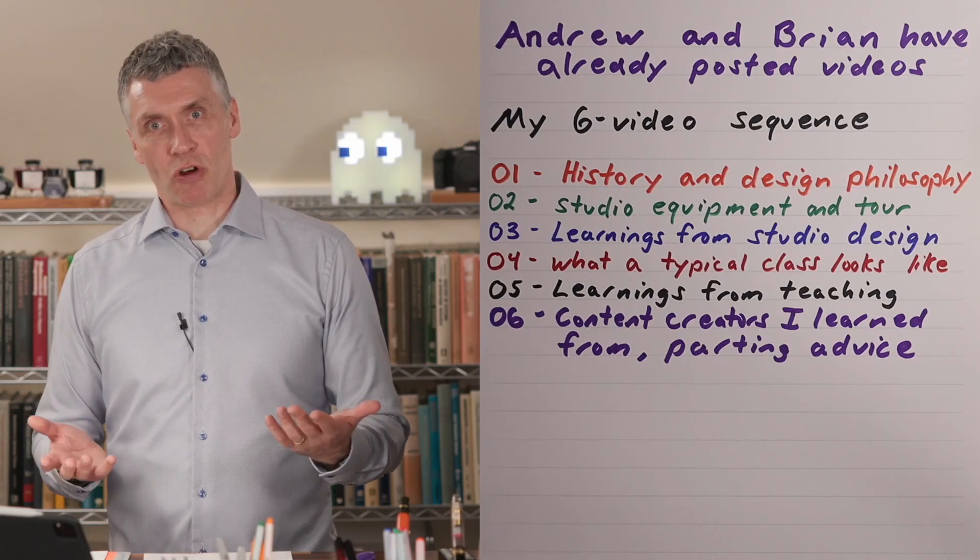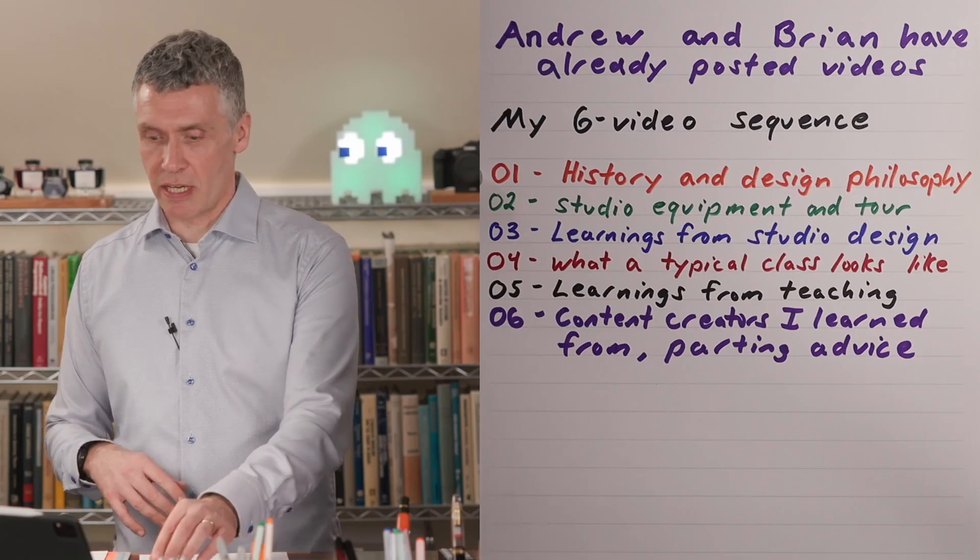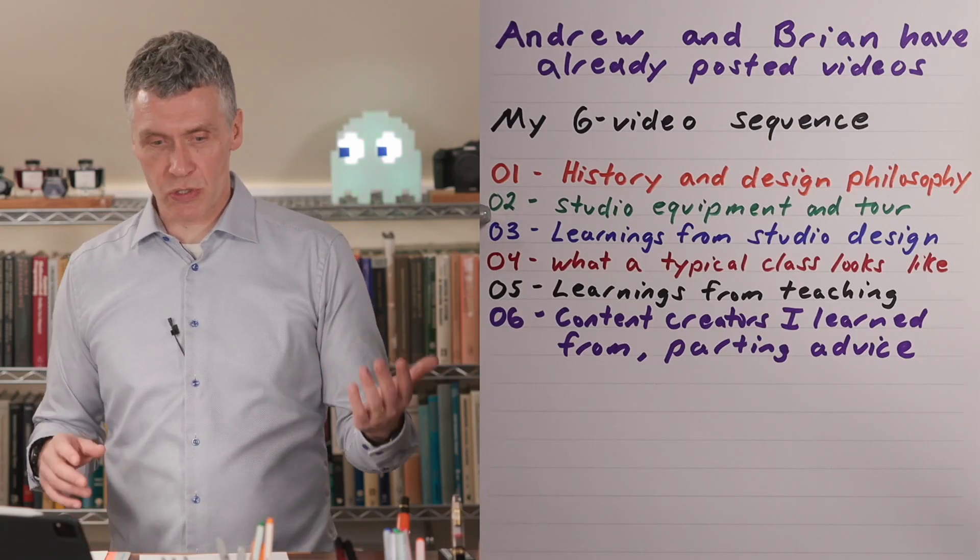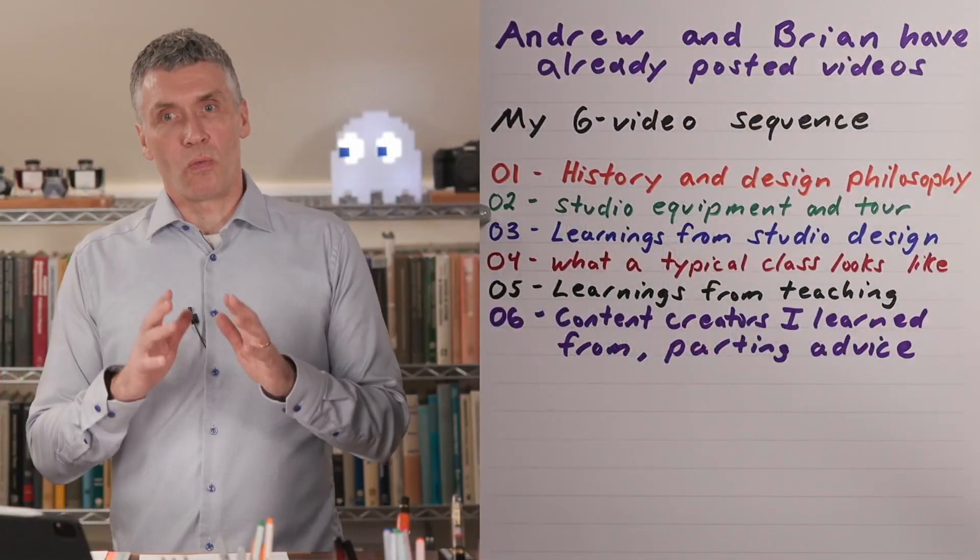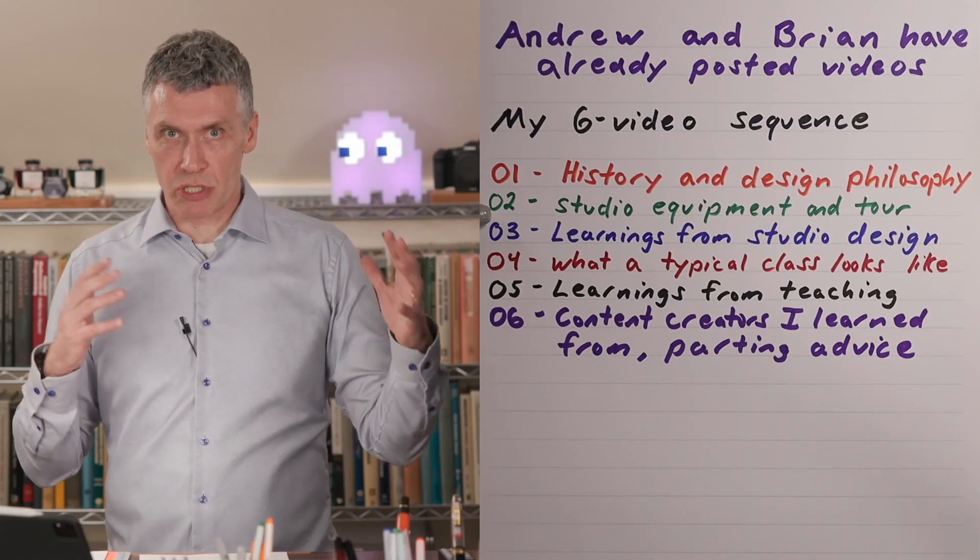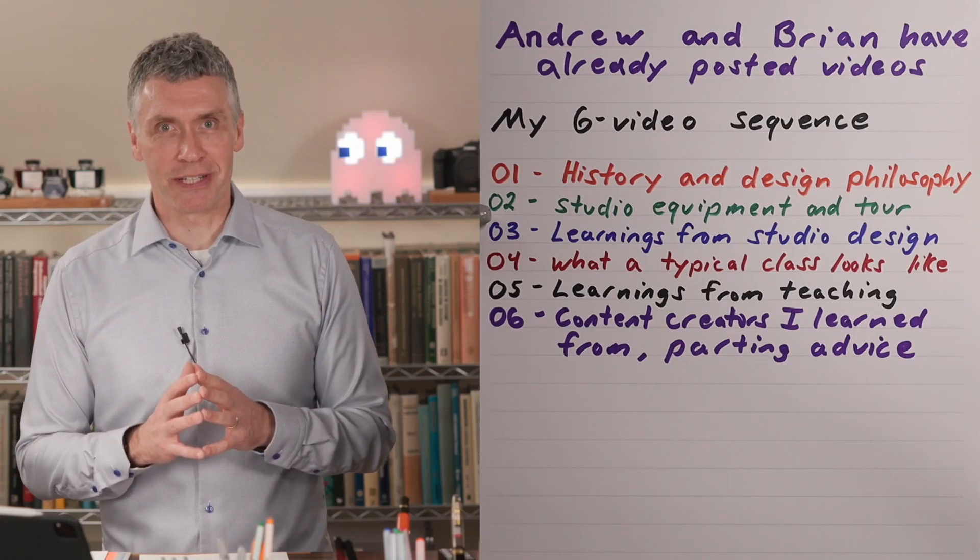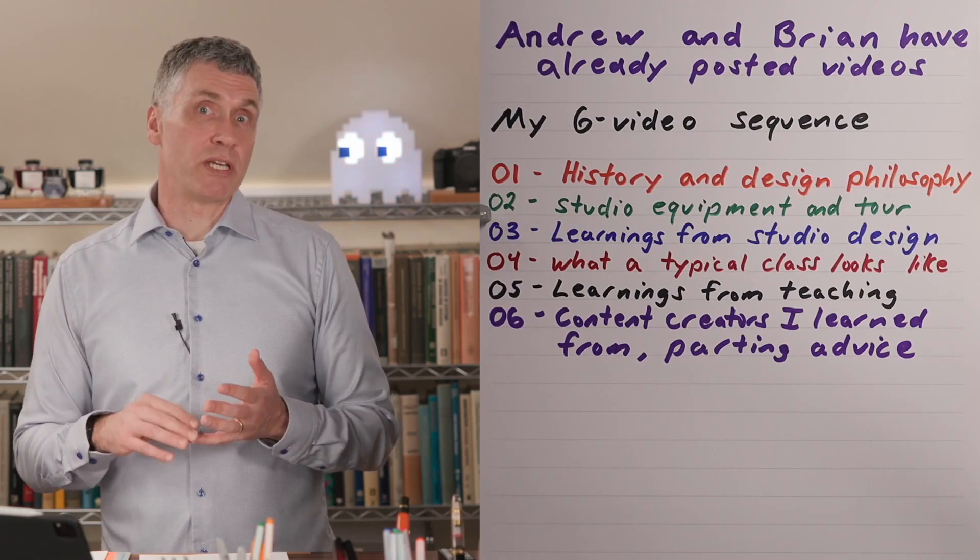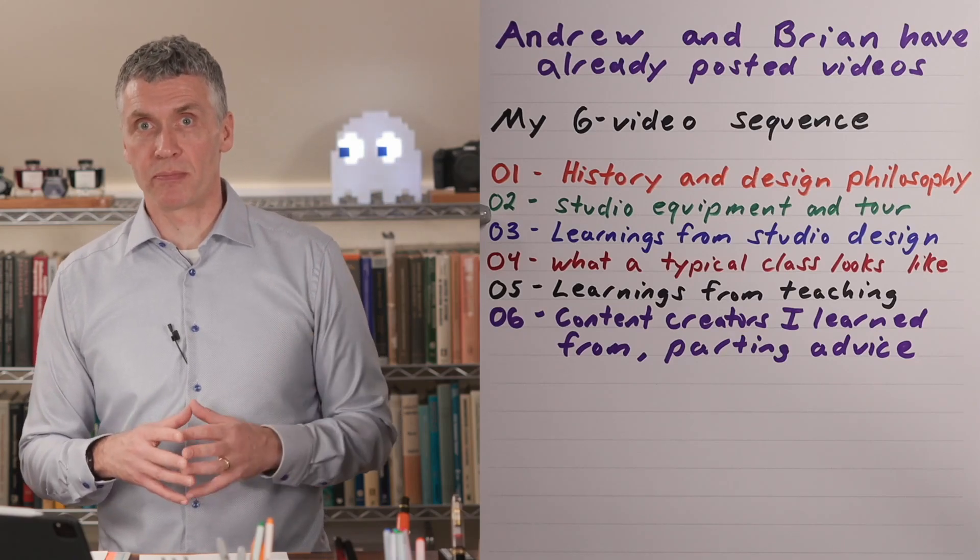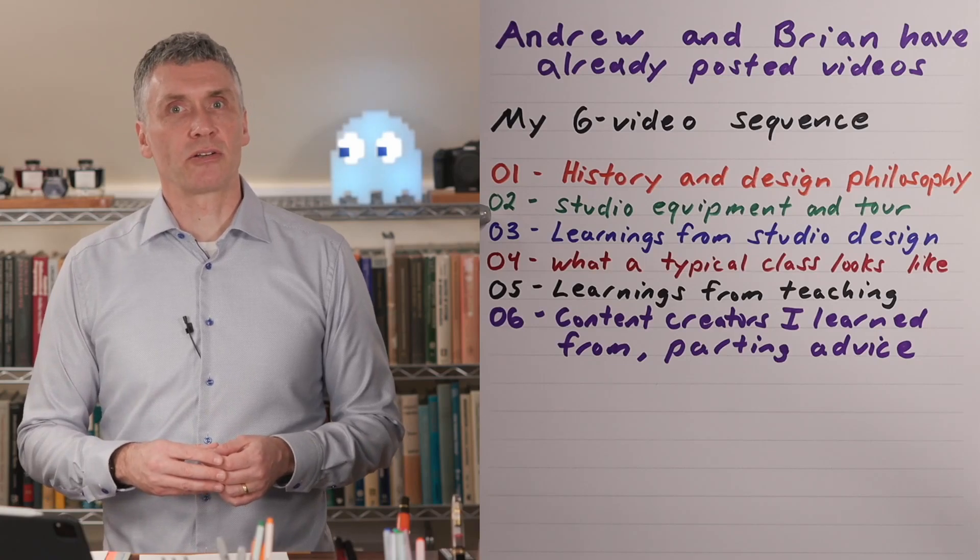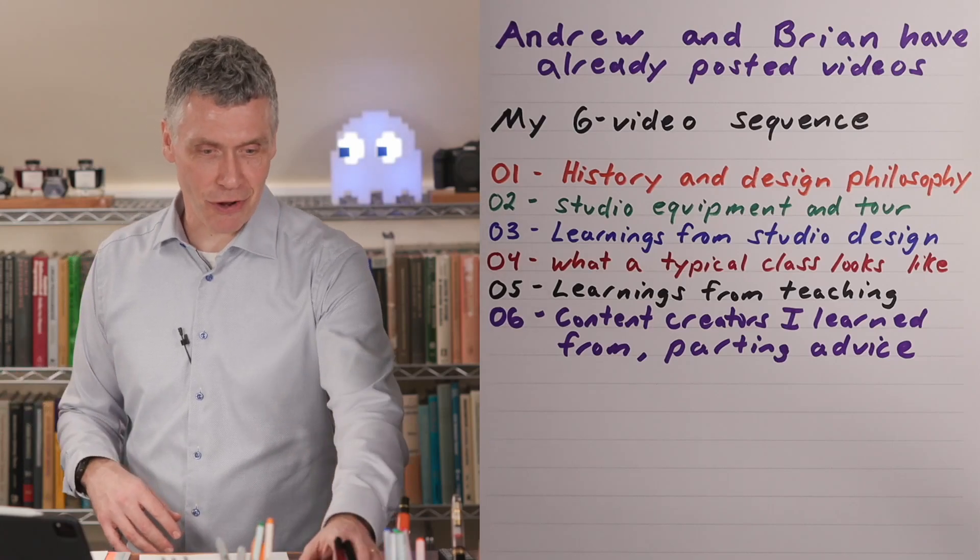My six-video sequence is structured as follows. This is the first of the videos, which gives a history and design philosophy. Then I'll actually take you through a tour of all the studio equipment, so you can see things in more detail. Then I'll share learnings from the studio design. Step four is what a typical class actually looks like, and video five is the learnings from teaching in the studio. Six are the content creators I've learned from and parting advice along this journey.